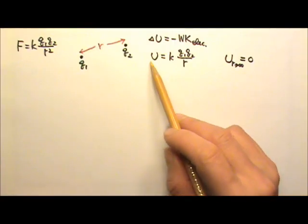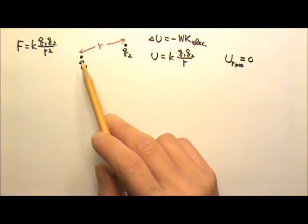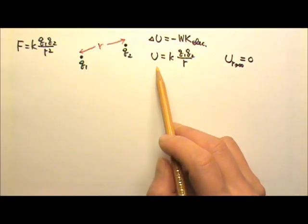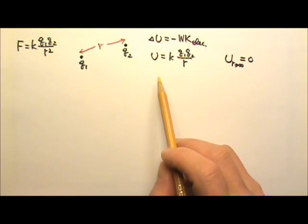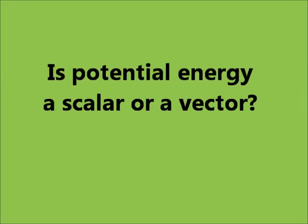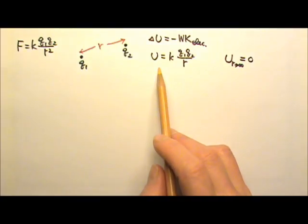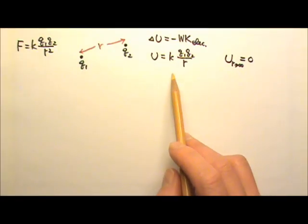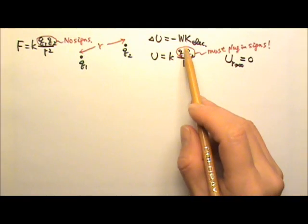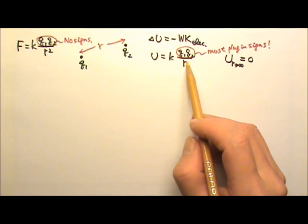So this is the equation for finding potential energy between two charges. Is potential energy a scalar or a vector? Work and energy are scalars. 5 joules of potential energy is not the same as negative 5 joules, so signs are important. For this equation, we must plug in the signs for the charges.